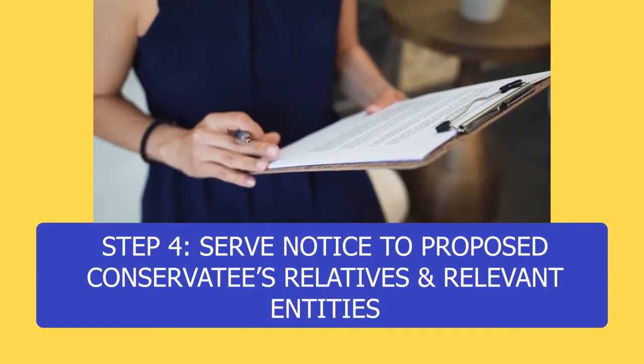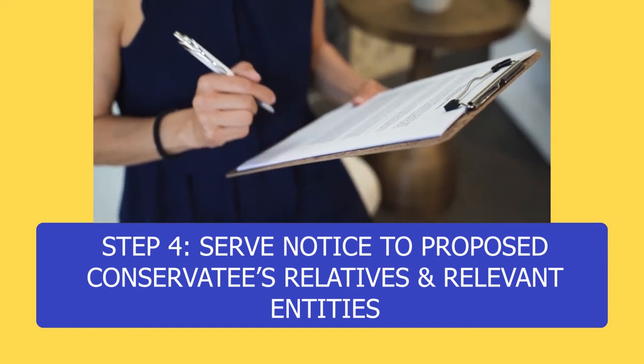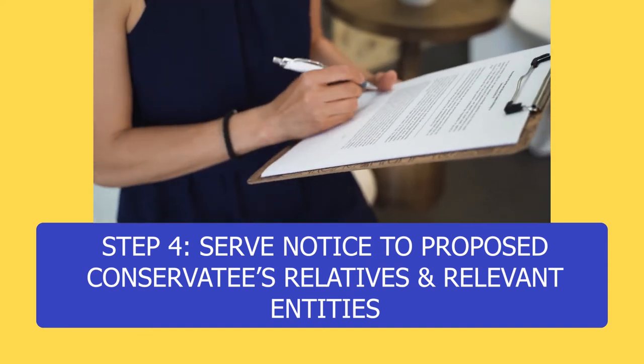Step 4: Serve notice on the proposed conservatee's relatives and relevant entities. The petitioner must have a disinterested party mail a written notice about the conservatorship court hearing and a copy of the petition to the conservatee's spouse or domestic partner, if any, and to all relatives that are within the second degree. If the proposed conservatee is receiving veteran benefits or certain social service benefits like regional care center services, then you must notice these entities by mail of the petition and the hearing.